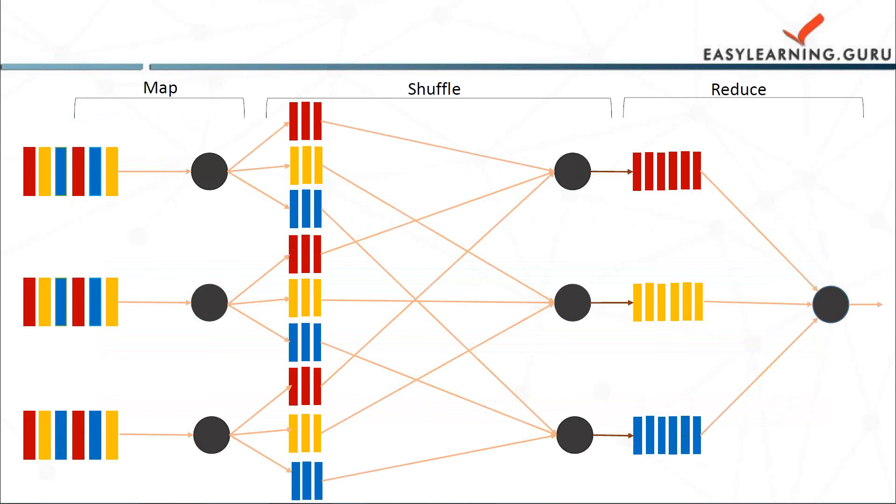Run the user provided reduce code. That is the fourth step. So reduce function is run exactly once for each K2 value produced by the map step. Then fifth is produce the final output. So the MapReduce system collects all the reduced output and sorts it by K2 to produce the final outcome.